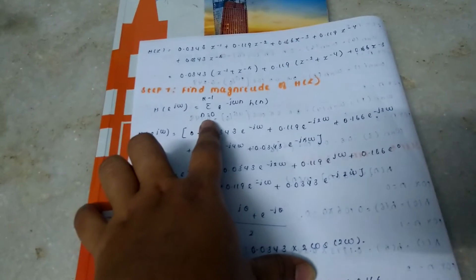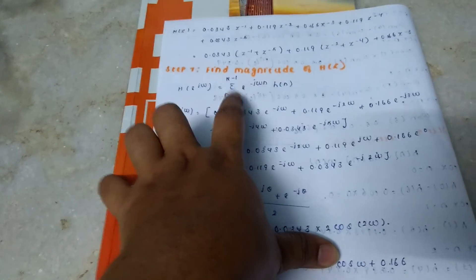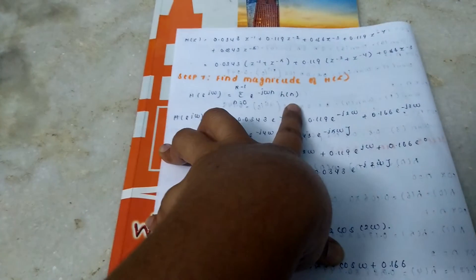This one is easier compared to another method. h(e^(jω)) = summation from n = 0 to n-1 of e^(-jωn) h(n).